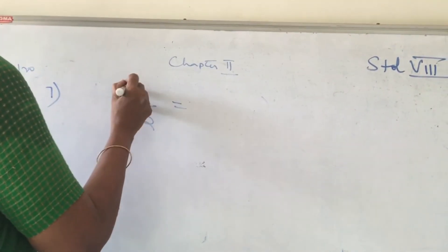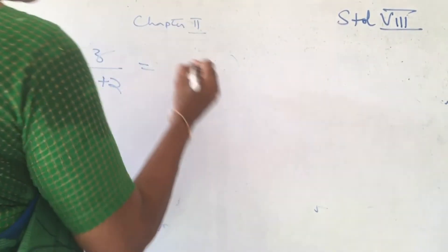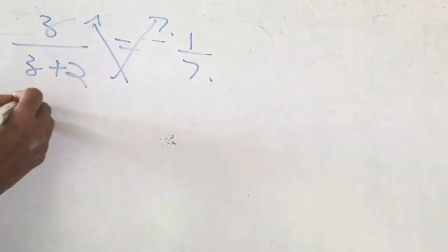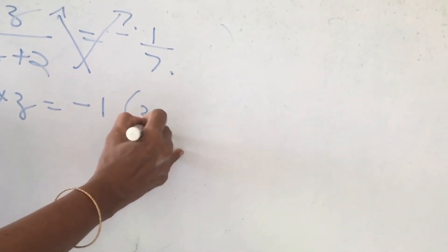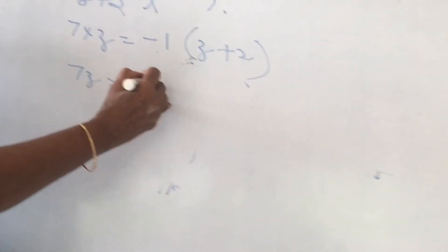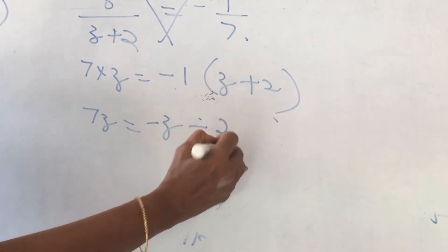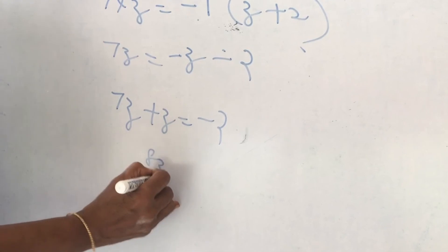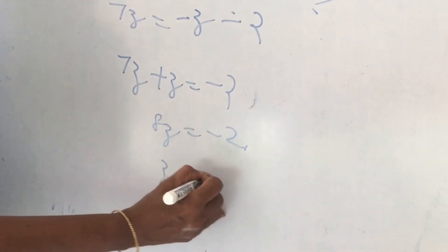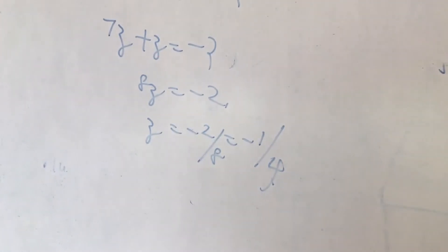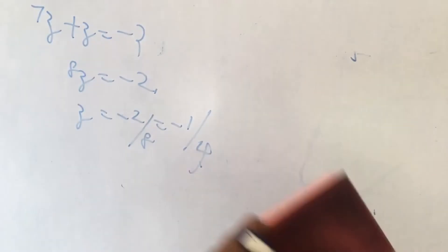Next: z by z plus 2 is equal to minus 1 by 7. The same method — cross multiply. 7 into z gives 7z; minus 1 into z plus 2 gives minus z minus 2. Bring z terms to the left side, numbers to the right. 8z is equal to minus 2.